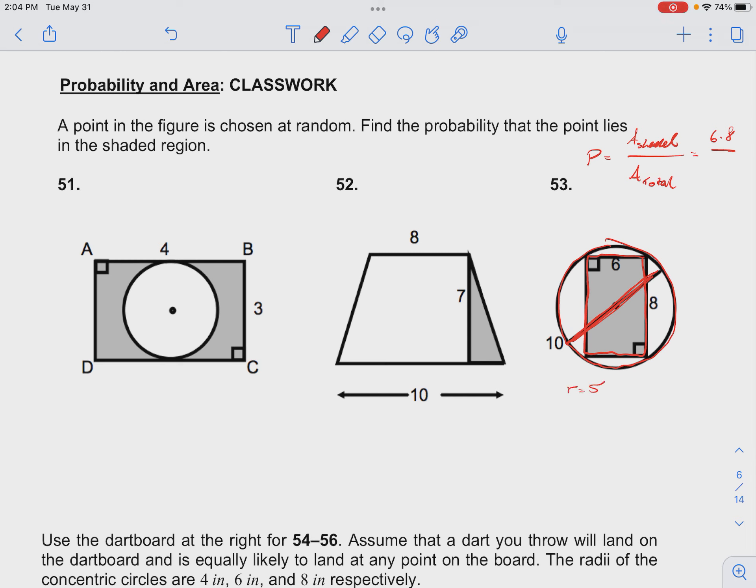The total area of that circle is pi r squared, which is pi times 5 squared. So we have a probability of 48 over 25 pi.